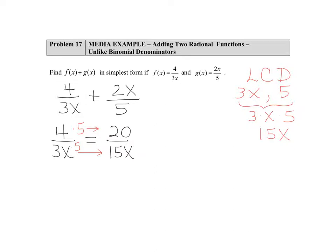Now we do the same thing with the second rational expression, 2x divided by 5. And we say what would that be equivalent to with a common denominator of 15x?